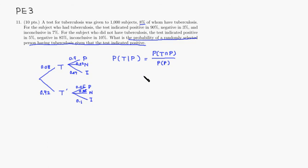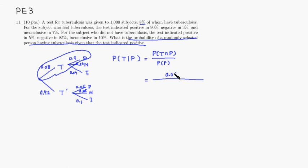Looking at the tree branch: having tuberculosis and a positive test result at the same time means the probability is 0.08 times 0.9. For the denominator, having a positive result can happen two ways: you have tuberculosis and test positive, or by mistake you don't have tuberculosis but get a positive result.